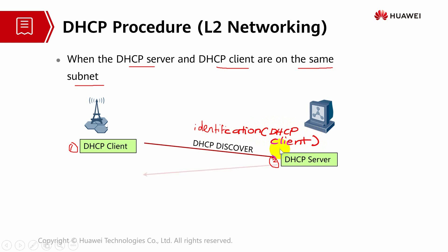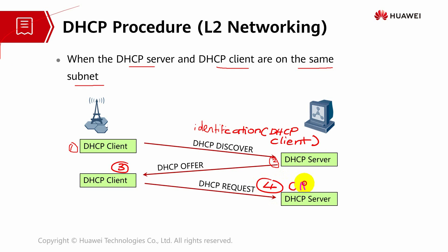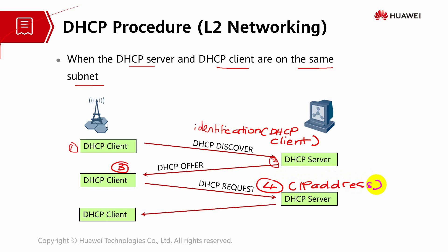Upon receiving the Discover, the server will respond with an Offer, meaning it will offer a packet to the client based on the discovery it has received. The client will then send a Request packet to the server requesting parameters - specifically the IP address. After that, the server will send an Acknowledgement packet to the client allocating those parameters, including the IP address information.